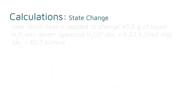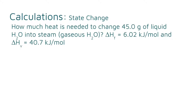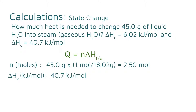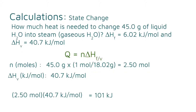For a state change question, you might be asked how much heat is needed to change 45 grams of liquid H₂O into steam. You are given heat of fusion and heat of vaporization. Because water is going from liquid to gas — boiling — the heat of vaporization should be used, not the heat of fusion. Heat of fusion would be used if the question asked for ice melting. To find moles, divide 45 grams by the molar mass of water to get 2.5 moles. Multiplying 2.5 moles times 40.7 kilojoules per mole gives 101 kilojoules. If you need the heat in joules, simply multiply by 1000.